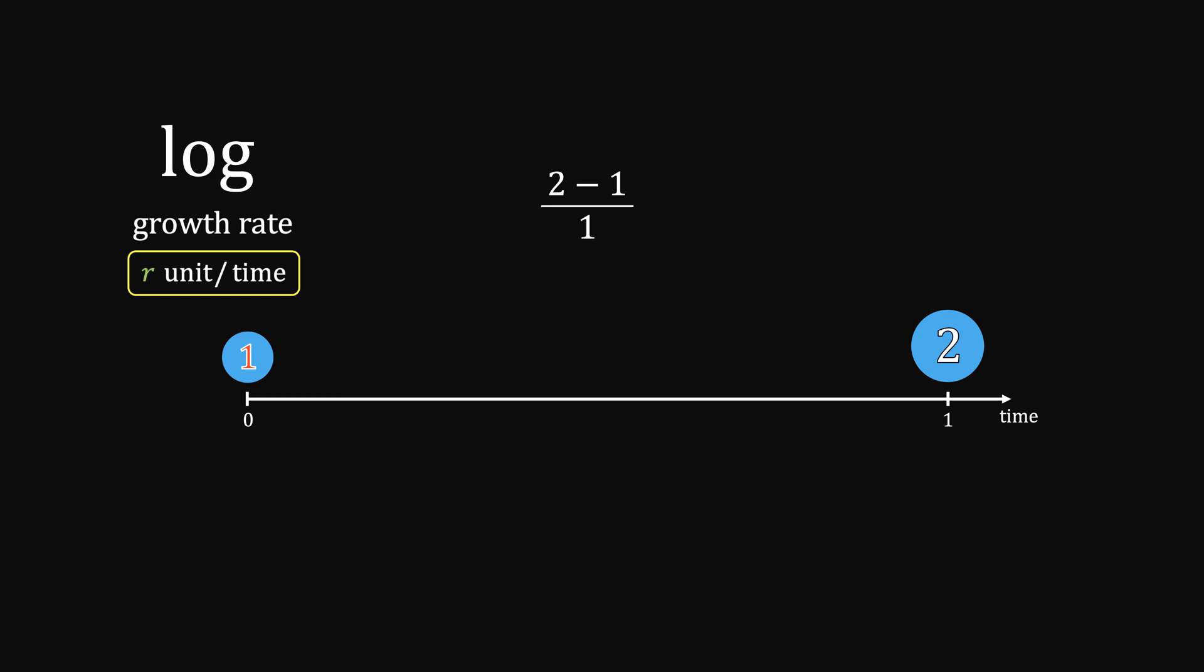But the trick here is the growth happens continuously, so the offspring are also contributing. This simple approach is attributing all the growth to the starting unit, which is incorrect.